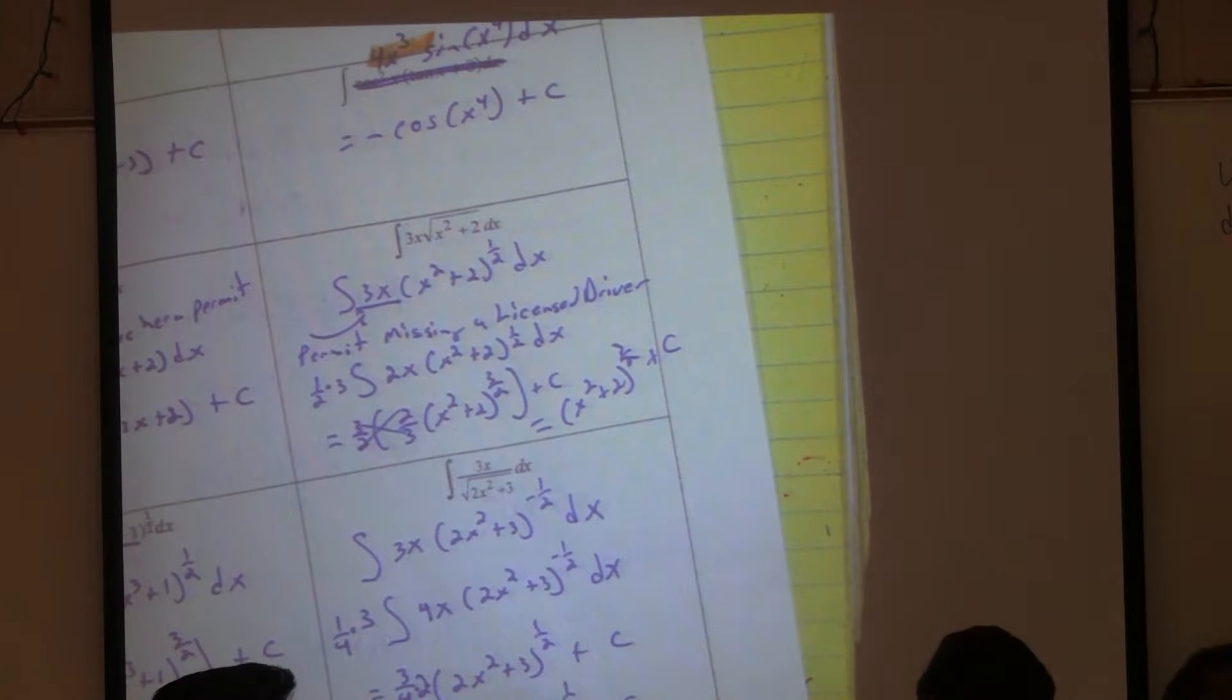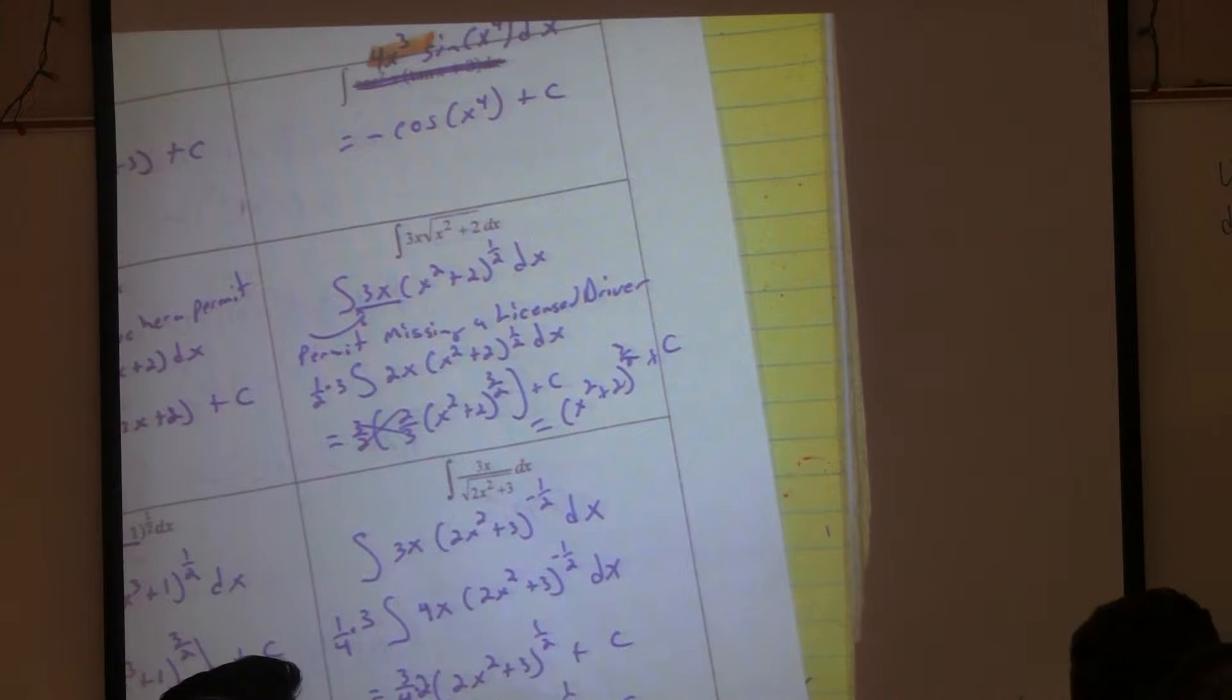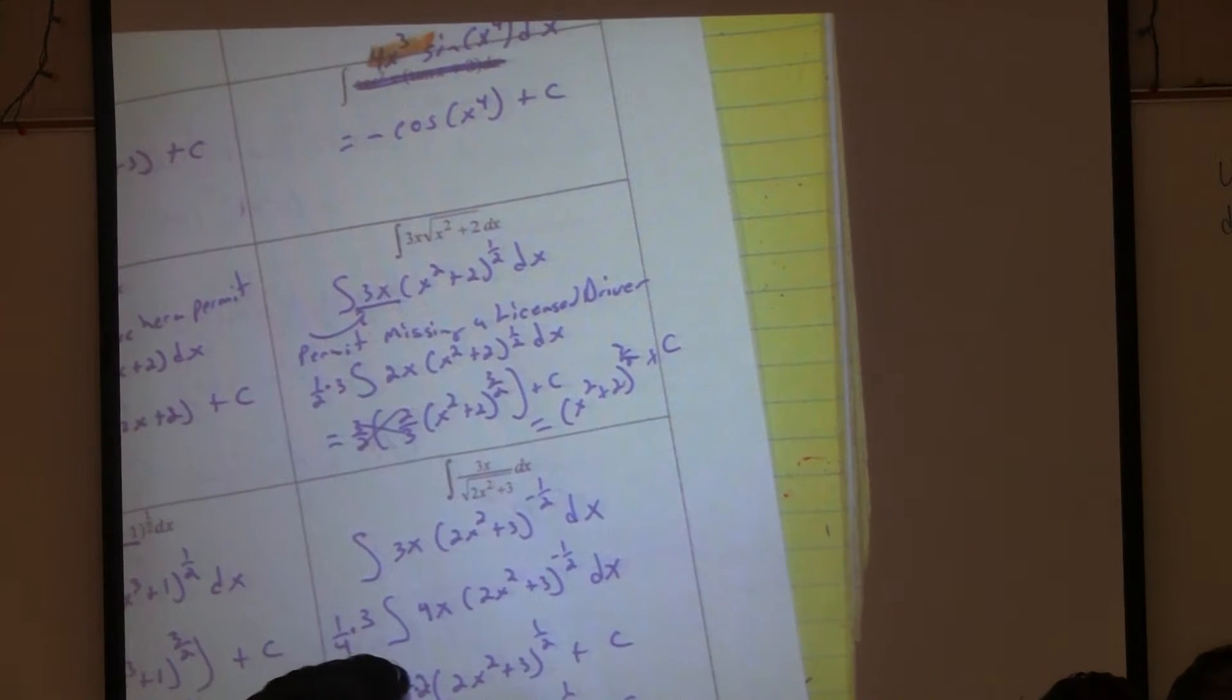let's say I have the integral of x times the square root of 3x plus 1 dx. Alright? So does this fit the pattern? What would be the license that would be required? 3. I don't have a 3 there. I have an x there. Okay? So in this particular problem, there's no way around it. I'm going to have to use the change of variable. You're going to have u is 3x plus 1, right? And then du is 3.